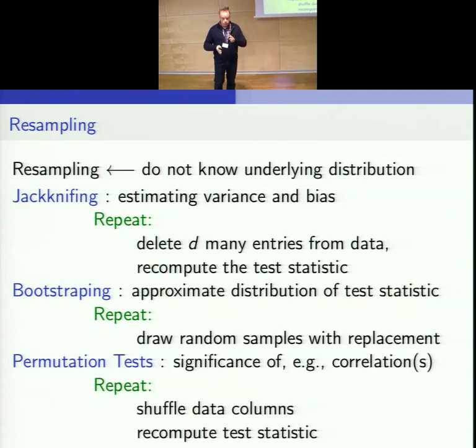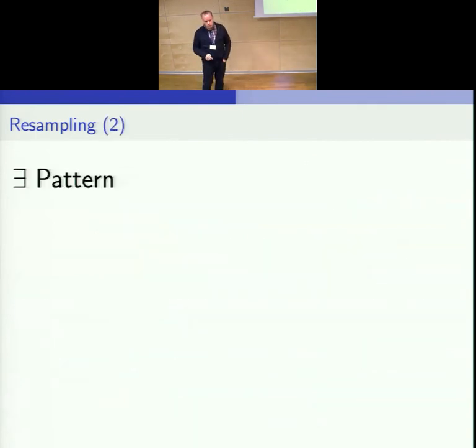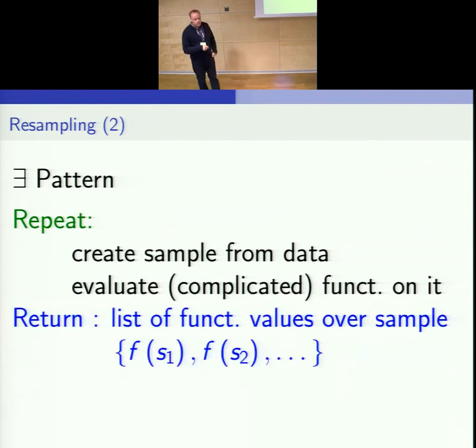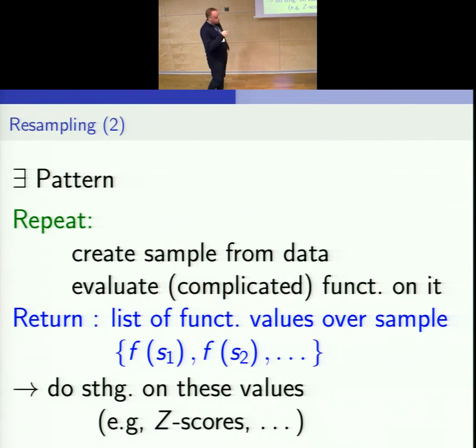Bootstrapping makes an approximate distribution of the test statistics. You repeat with random samples with replacement, recompute your test statistics, and then you get a distribution of these descriptive values. Now you know where your original value lies—is it a typical value or an outlier? Permutation tests are about significance when you have two or three different random variables. You shuffle the data columns to destroy artificially the correlation, then recompute the test statistics.